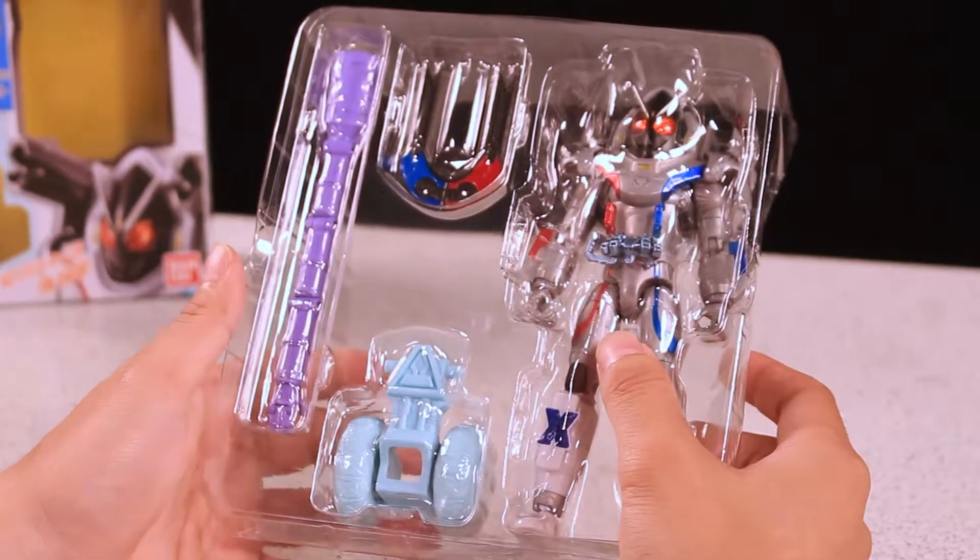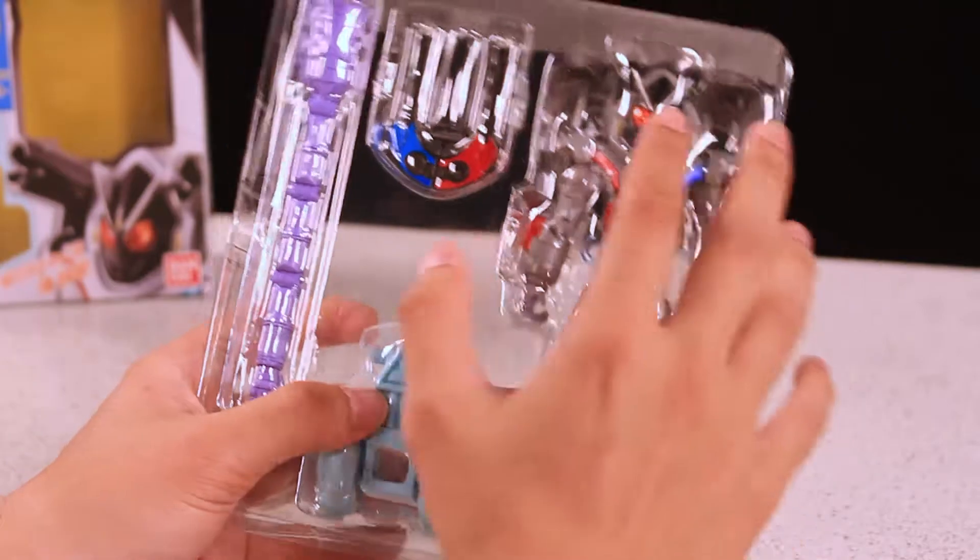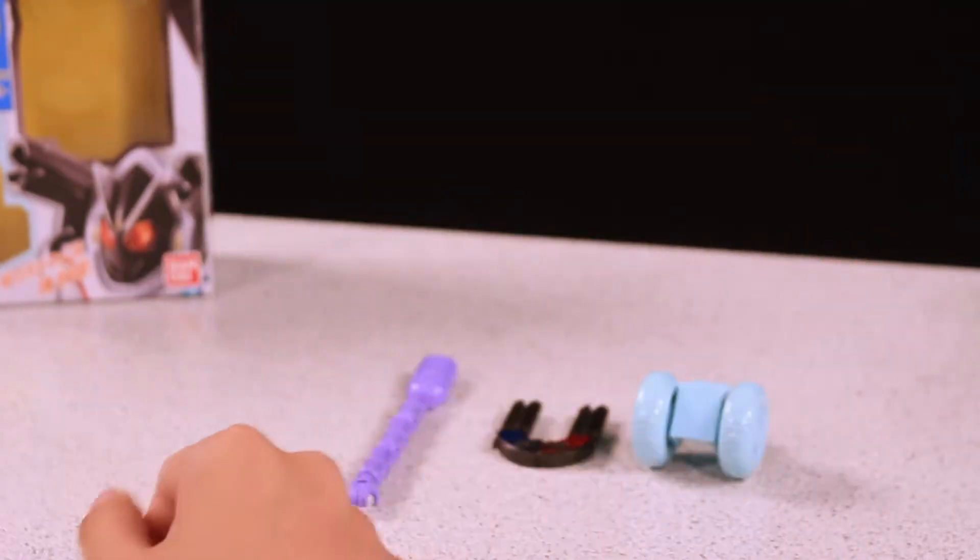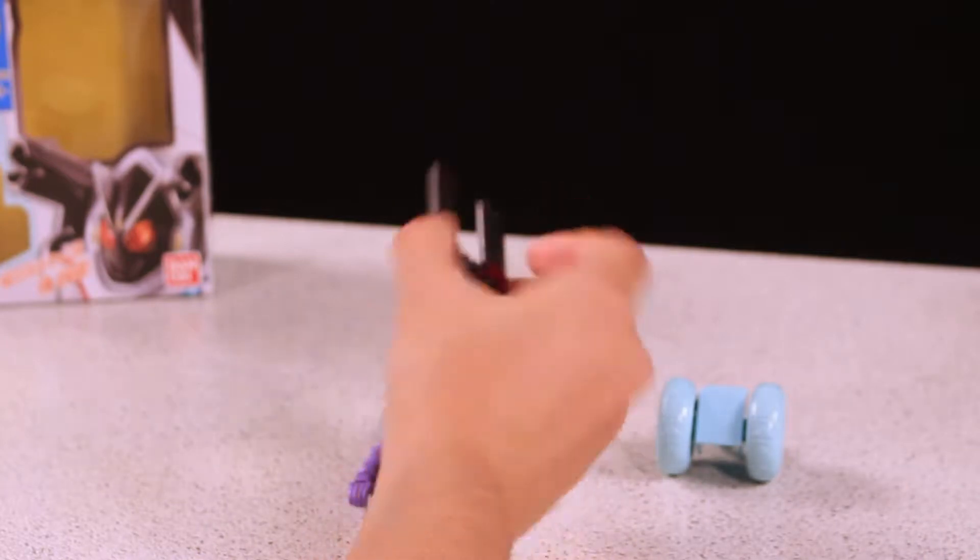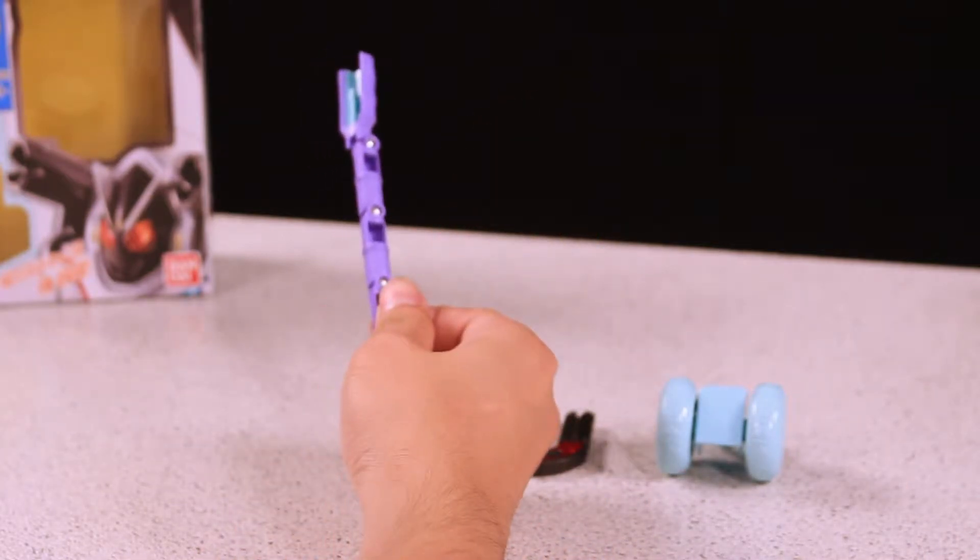So here is what's inside. It's pretty neat. This is all we have for the accessories. This is the wheel module, this is the magnet cannon, and this is the hand module.